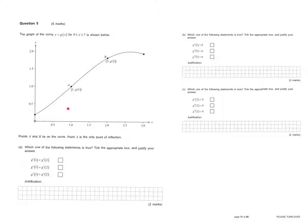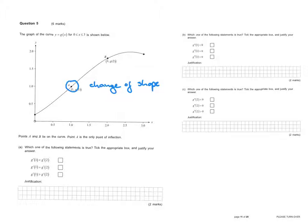The domain is x between 0 and 3. Points A and B lie on the curve. One more piece of information: point A is the only point of inflection. So at this point we know the shape is going to change — either from convex to concave or concave to convex.